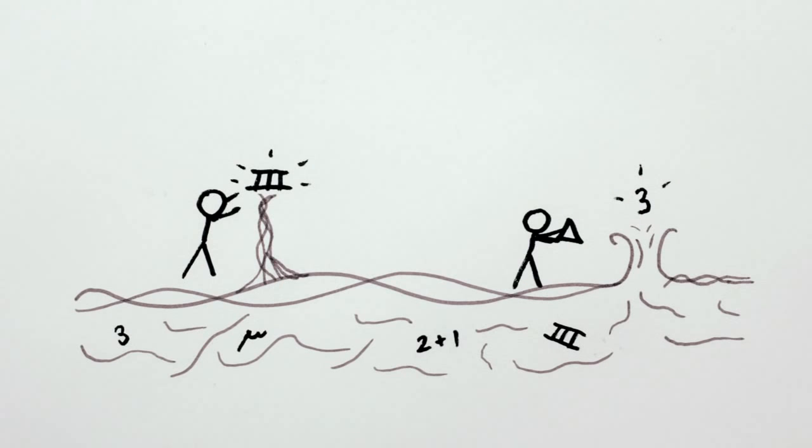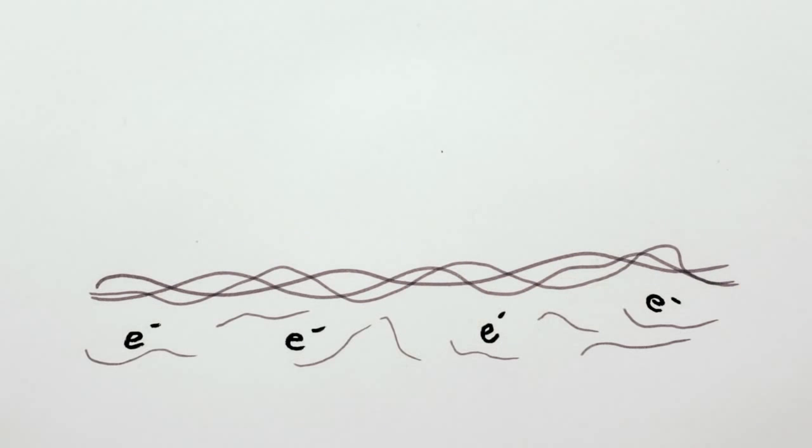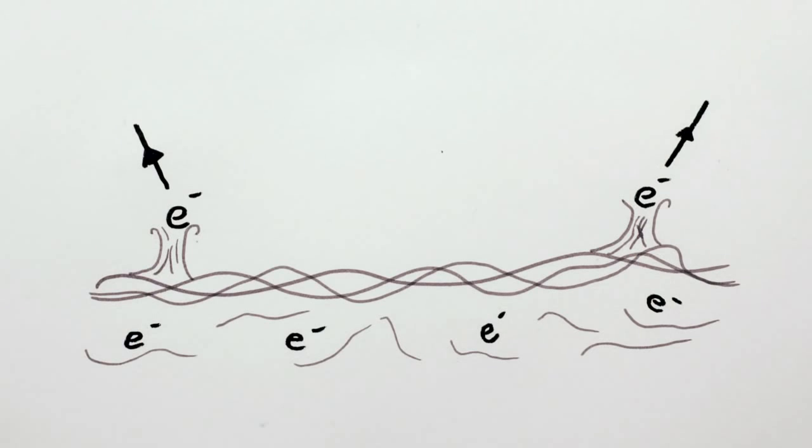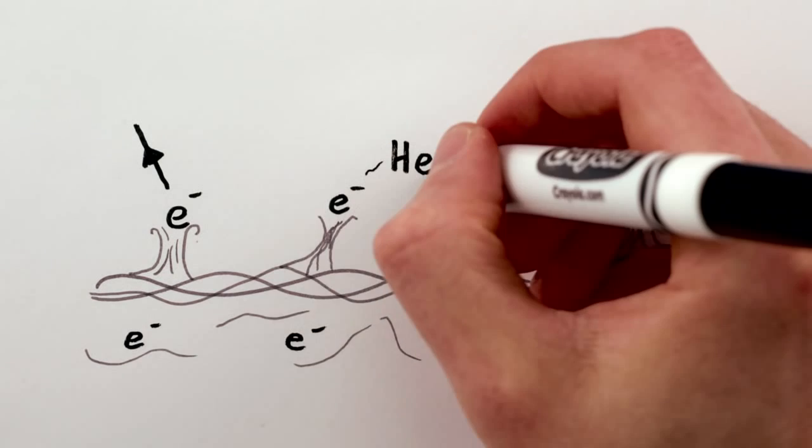It's the same case with the electron. There's an everywhere-permeating electron-ness called a quantum field, and from that field every electron in existence has been summoned, and they are all exactly electron.